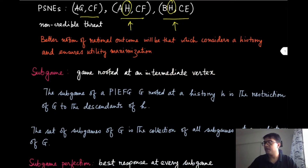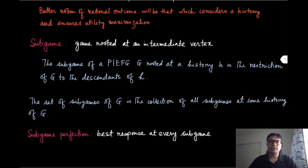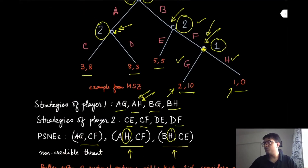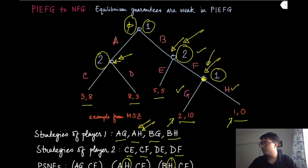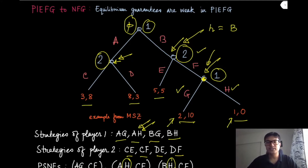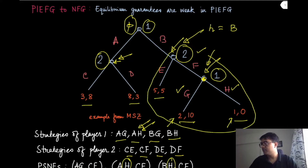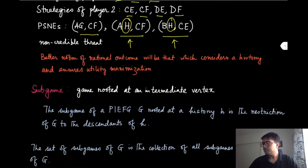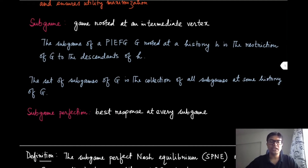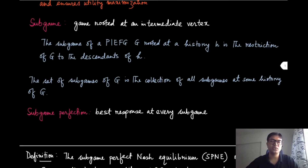By the name you can kind of guess what subgames are — it is a game that is rooted at an intermediate vertex or a non-terminal history. The subgame of a PIEFG rooted at a history H is the restriction of this game G to the descendants of H. Suppose we are at history B — there is only one action that has been picked by player one. At that history, the subtree rooted at this history is what we call the subgame rooted at H. The set of all subgames of G is the collection of all subgames at every non-terminal history of G.